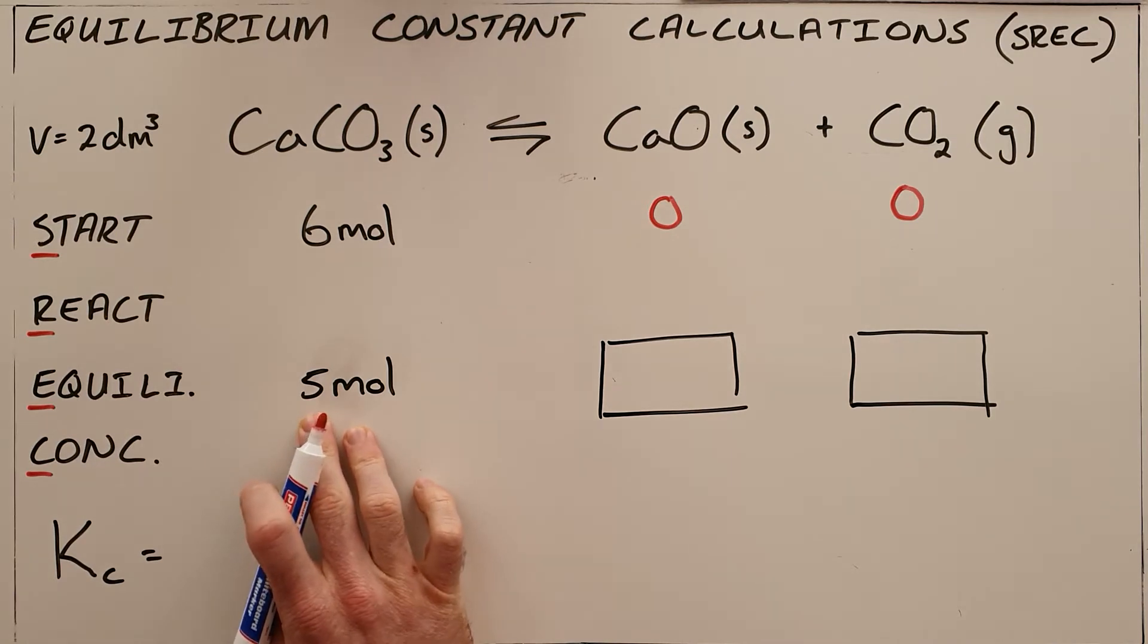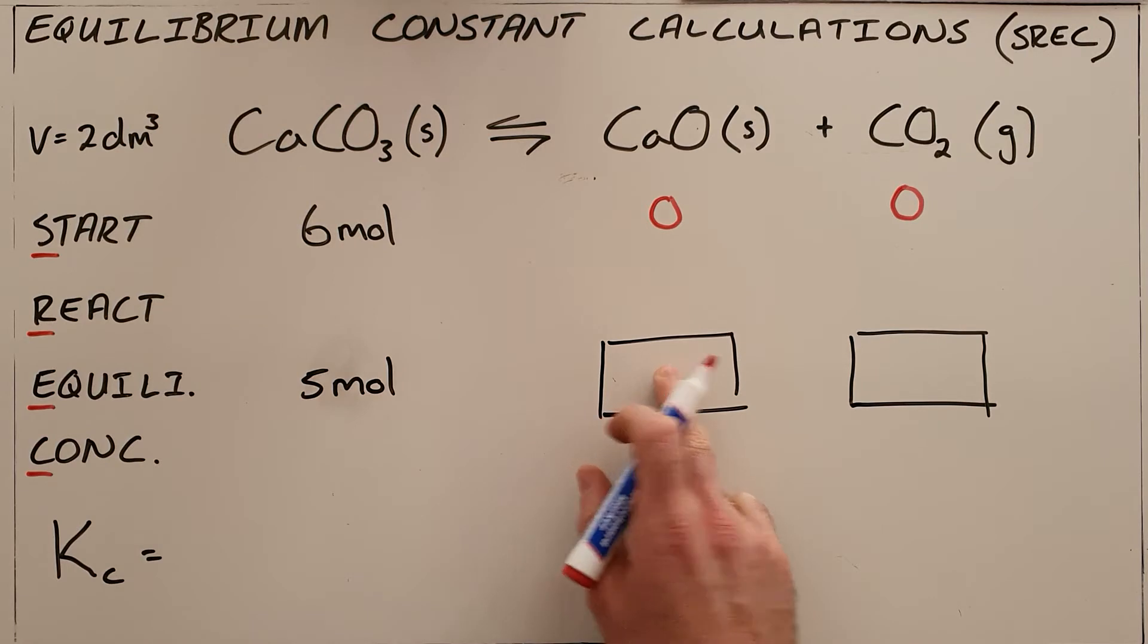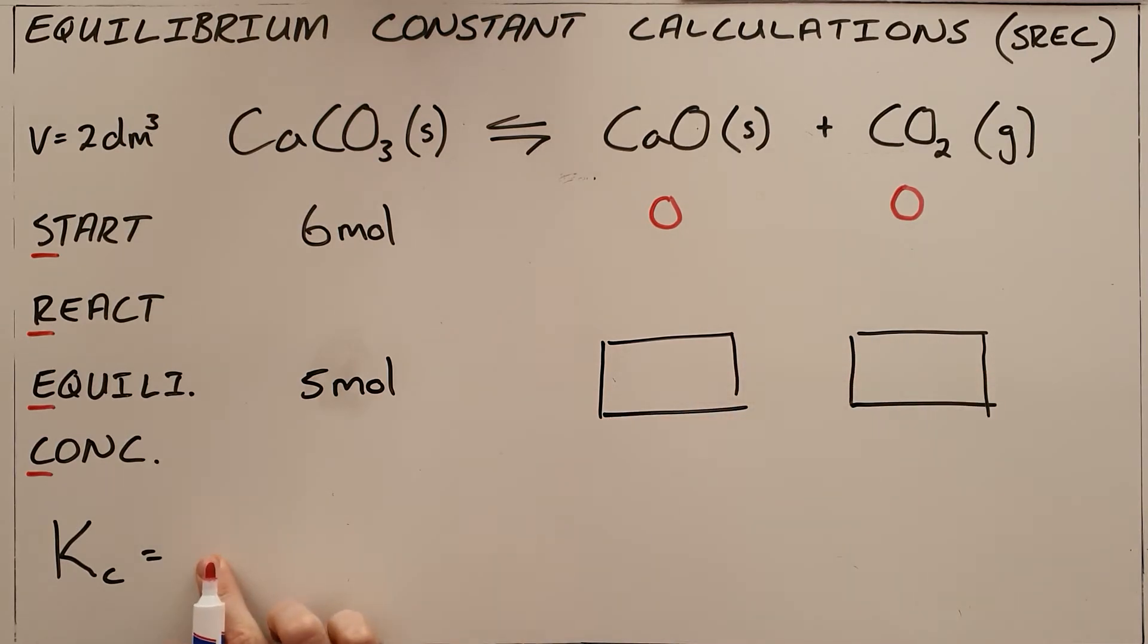So this is all part of the question, and then the question asks if there's 5 moles of calcium carbonate at equilibrium, what quantities of calcium oxide and carbon dioxide remain, and what is the equilibrium constant for this reaction at this temperature?